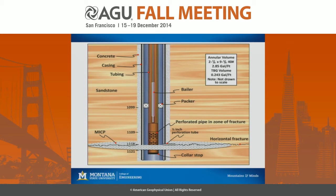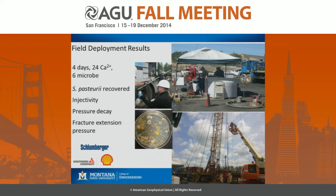We utilized a baler injection technology — a conventional oilfield technology — to deliver concentrated solutions of calcium and microbes into the subsurface. The baler had a shear pin at the bottom that, when it hit the collar stop at the bottom of the well, would open and deliver the contents into the horizontal fracture region. Down the tubing string, we then injected brine to dilute those concentrated solutions into the fracture region. Because this is a reactive transport problem with reaction occurring as fluid flows outward, we used a pulse injection strategy — injecting and then letting the system sit for a while to promote precipitation during periods of rest.